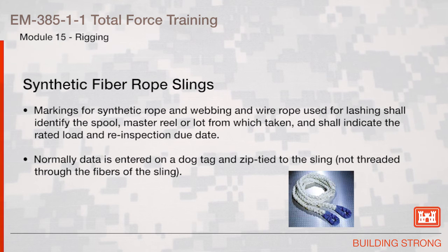Synthetic Fiber Rope Slings. Markings for synthetic rope and webbing and wire rope used for lashing shall identify the spool, master reel, or lot from which taken and shall indicate the rated load and re-inspection due date. The sling information is entered on a dog tag and zip tied to the sling and not threaded through the fibers of the sling.